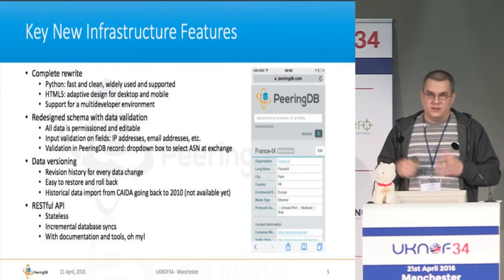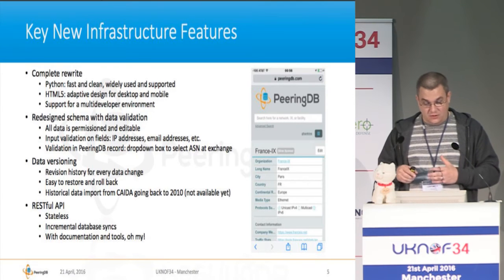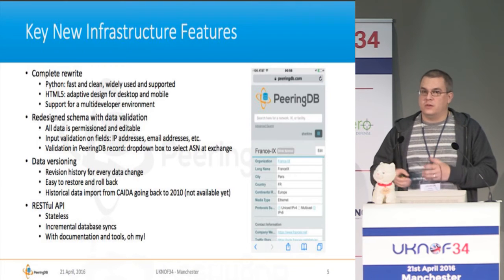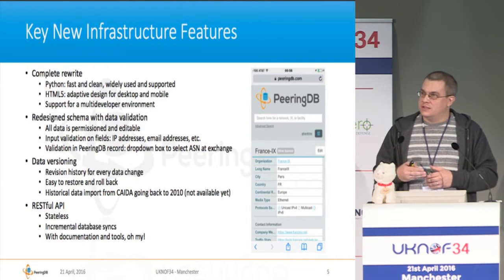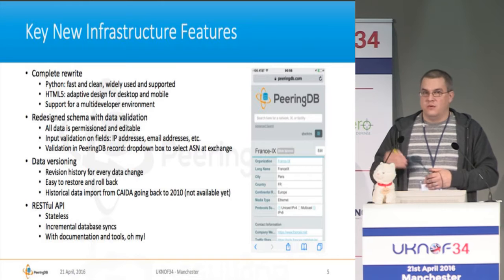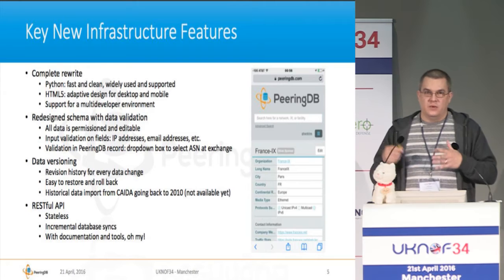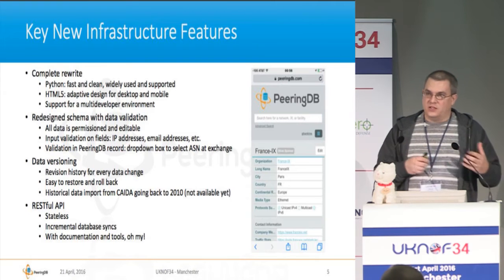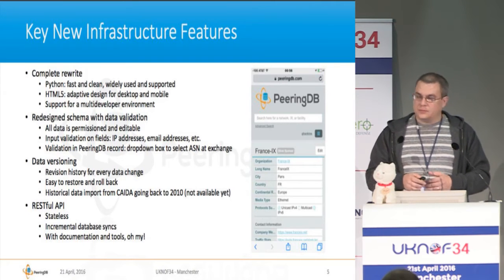There's data versioning, which is really good because every change has a version in history, making it very easy to roll back. It's also easy to import old data. We have some data dumps going back to 2010, which took about two weeks to import. It's not available yet, but the idea is that we can provide historical data on peering and how it's changed over time.